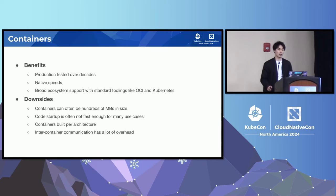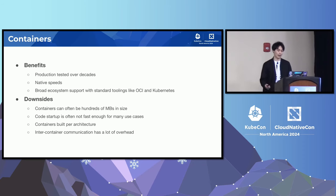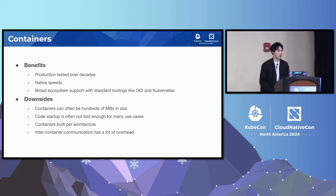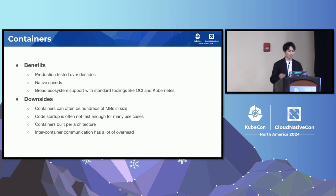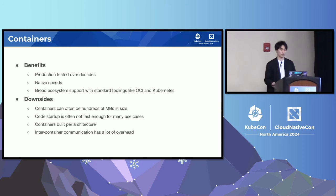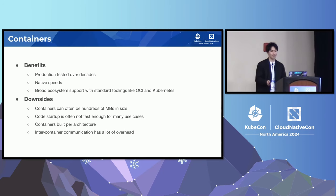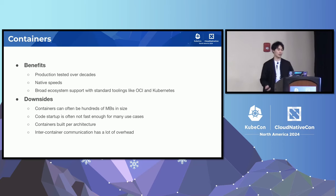Now let's see how WebAssembly compares and contrasts to containers. Containers have existed for decades — they're production-tested and people have general trust in them. Containers can run at native speed and have broad ecosystem support with standard toolings like OCI and Kubernetes. However, containers can be hundreds of megabytes in size, sometimes bundling the entire operating system. They have a somewhat slow cold-startup time — up to a few seconds — which isn't fast enough for use cases like bursty function workloads. Containers must also be built per architecture: a container built for x86 will not run on ARM. Inter-container communication has a lot of overhead going through the entire network stack — serialization, deserialization, et cetera.